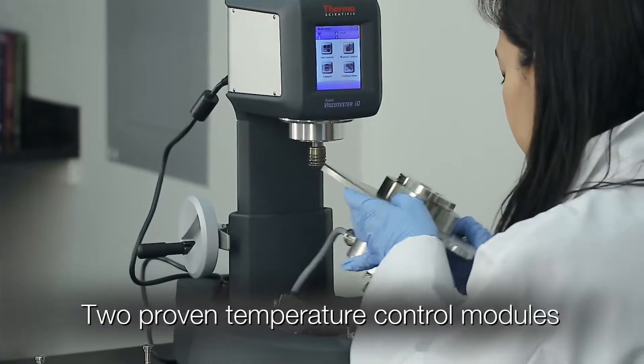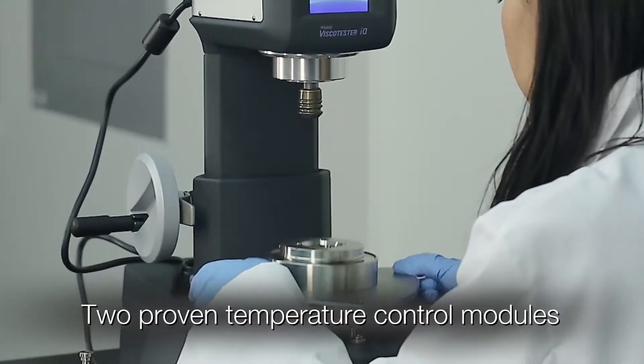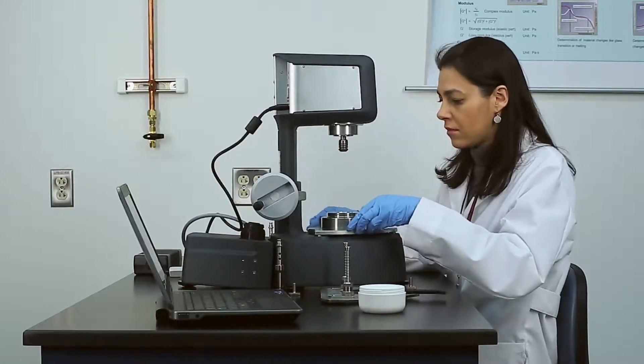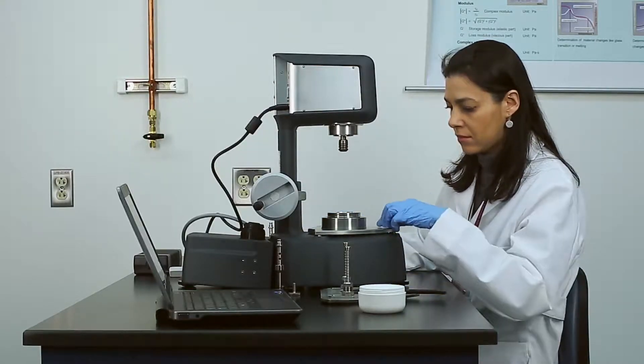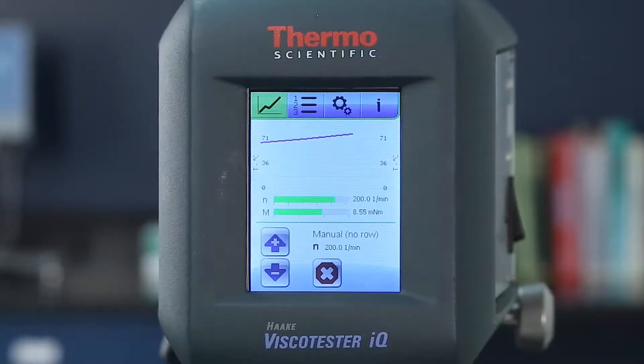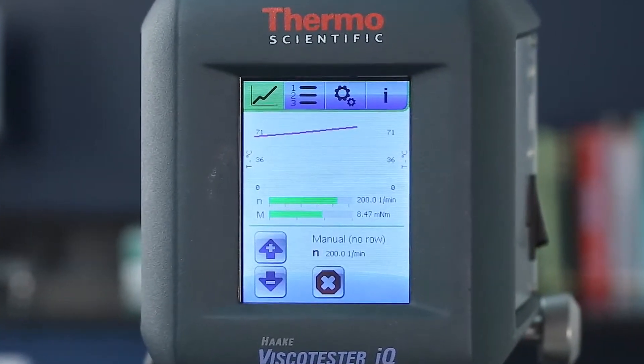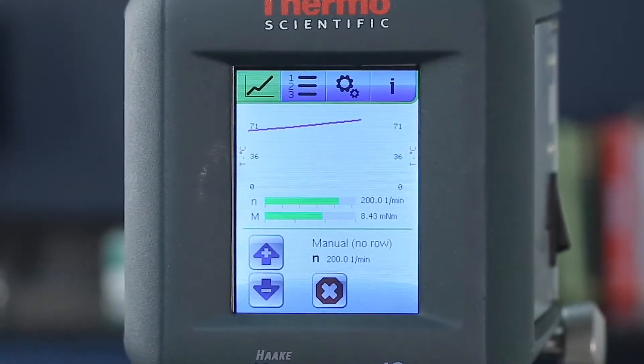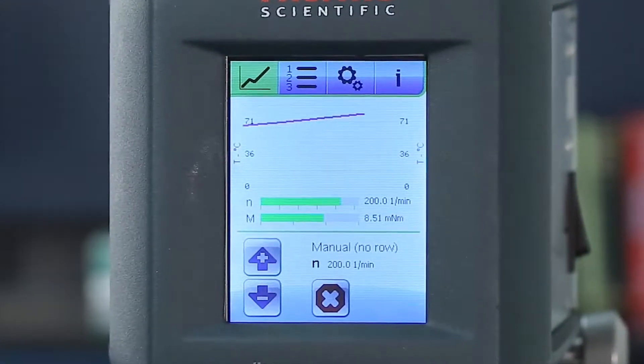Two modules are available for reliable temperature control, including a self-contained Peltier controlled unit. For maximum temperature range, the liquid controlled module spans minus 20 degrees Celsius up to 180 degrees Celsius.